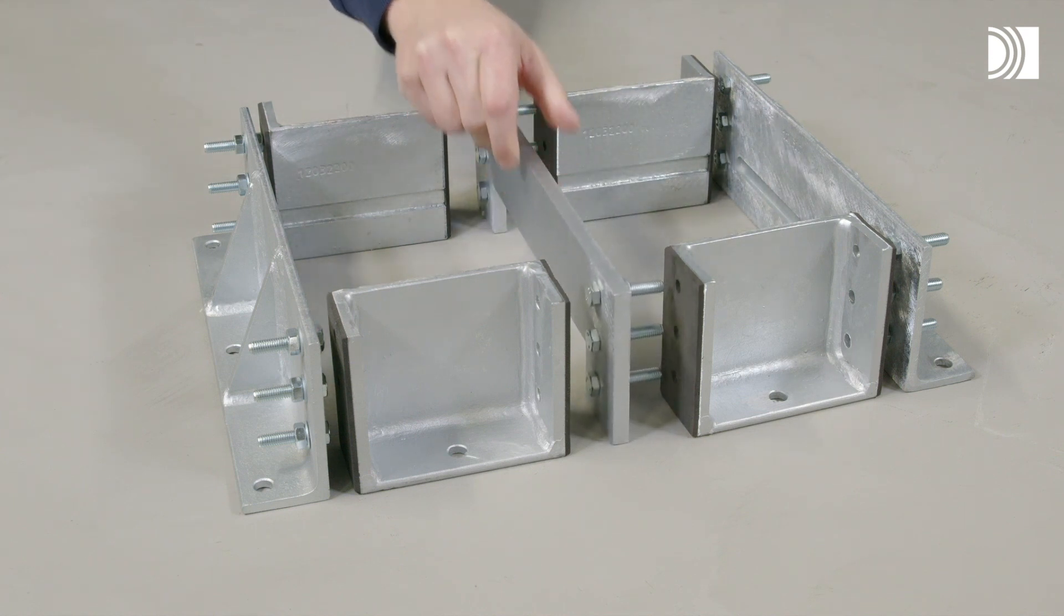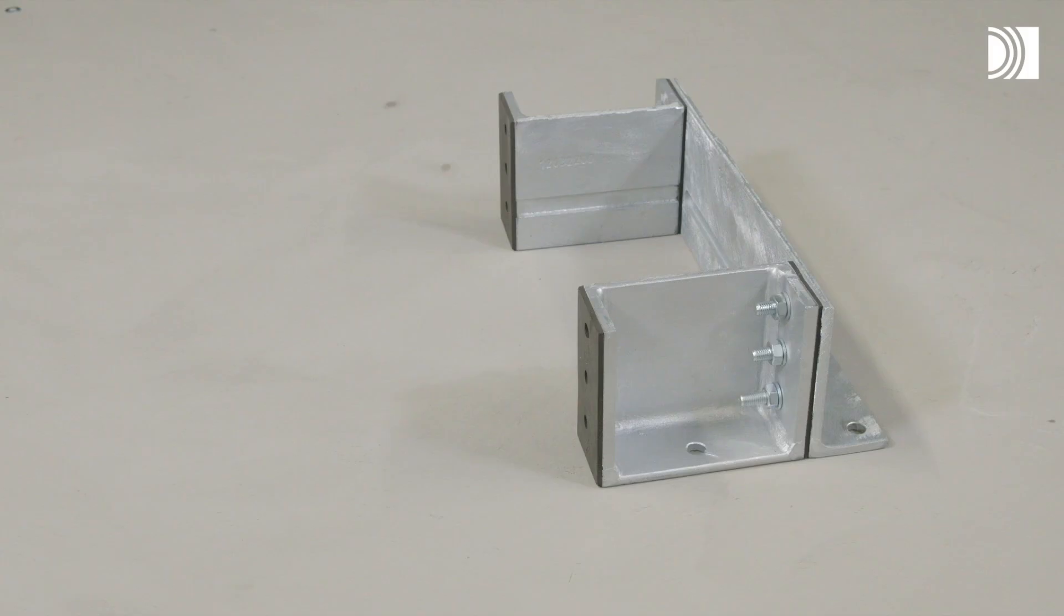You assemble the frame components around routed cables using the supplied fasteners. When assembling the frame components, just mount and attach all fasteners loosely.